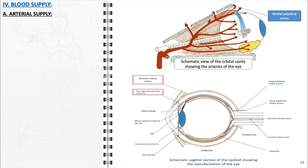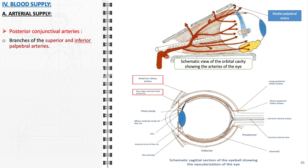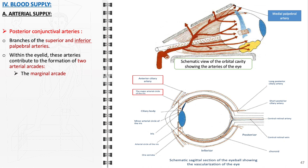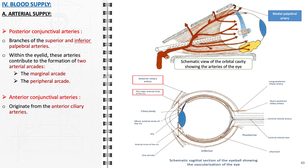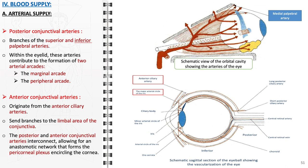The conjunctiva receives its arterial supply from two primary sources. The posterior conjunctival arteries are branches of the superior and inferior palpebral arteries, which are in turn branches of the ophthalmic artery. Within the eyelids, these arteries contribute to the formation of two arterial arcades: the marginal arcade, located near the lid margin, primarily supplies the eyelid's edge; and the tarsal arcade, situated more peripherally, supplies the majority of the tarsal conjunctiva. The anterior conjunctival arteries arise from the anterior ciliary arteries, themselves branches of the muscular arteries that also stem from the ophthalmic artery. These send branches to the limbal area of the conjunctiva and interconnect with the posterior conjunctival arteries, forming an anastomotic network that creates the pericorneal plexus, which encircles the cornea.